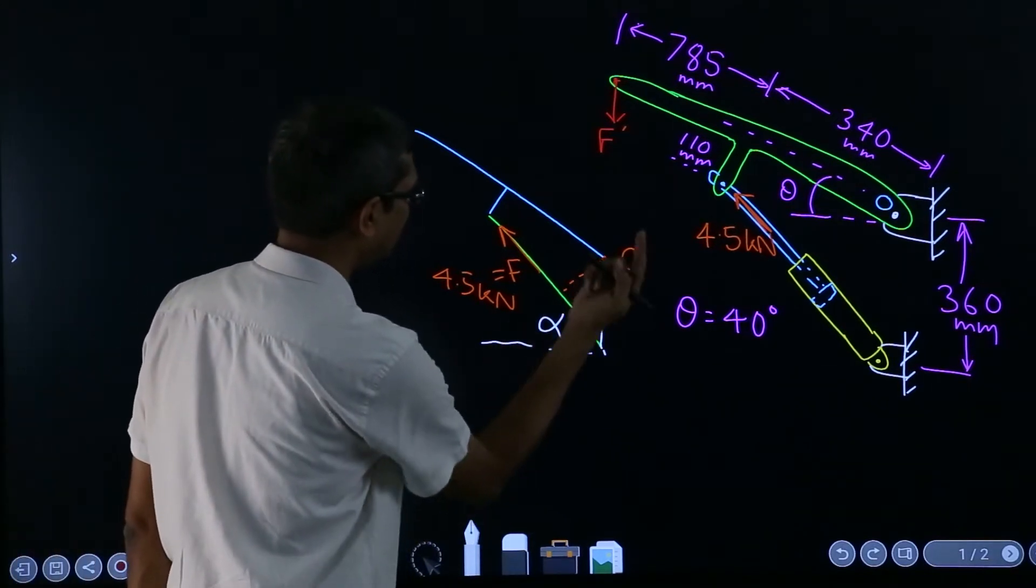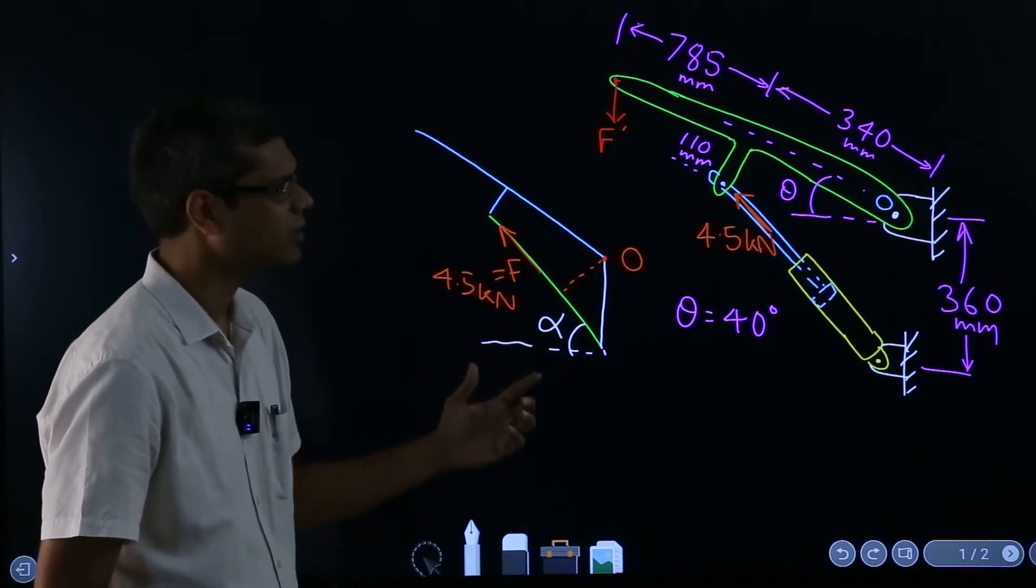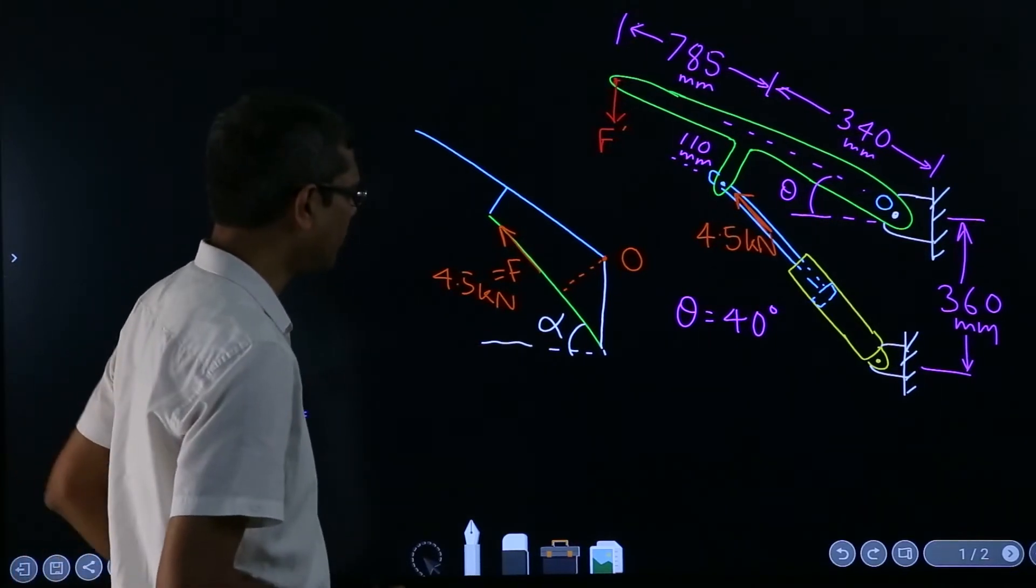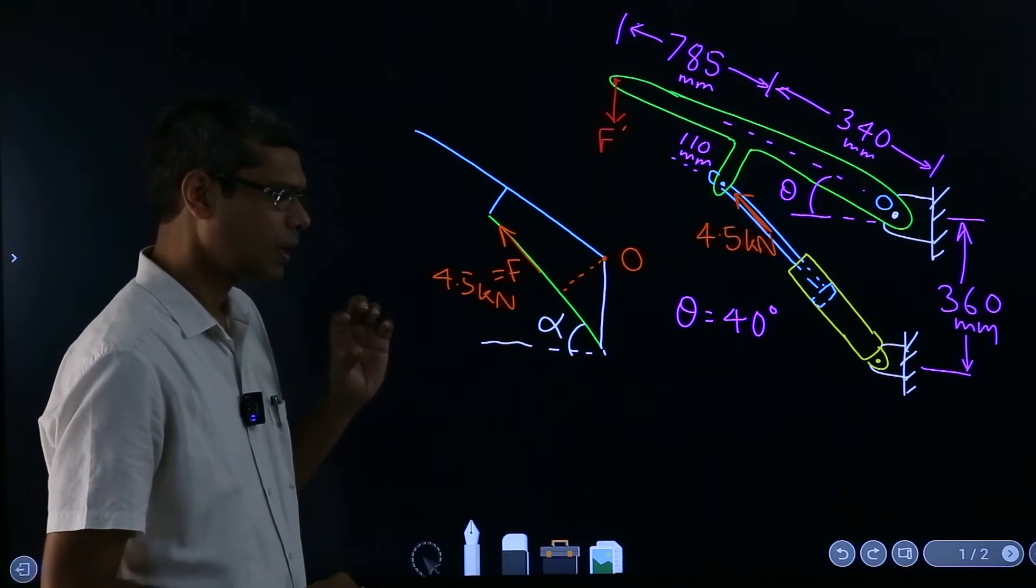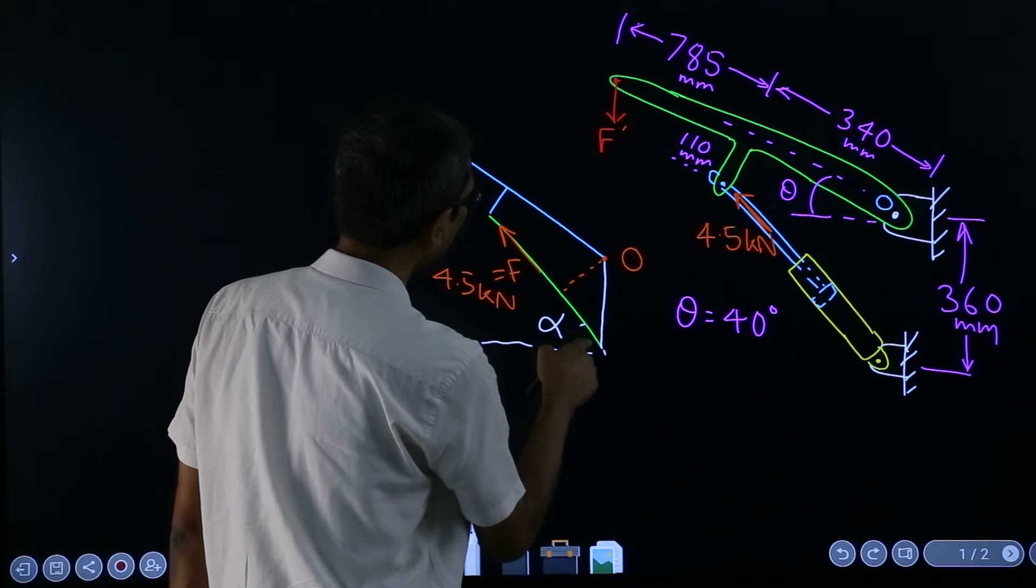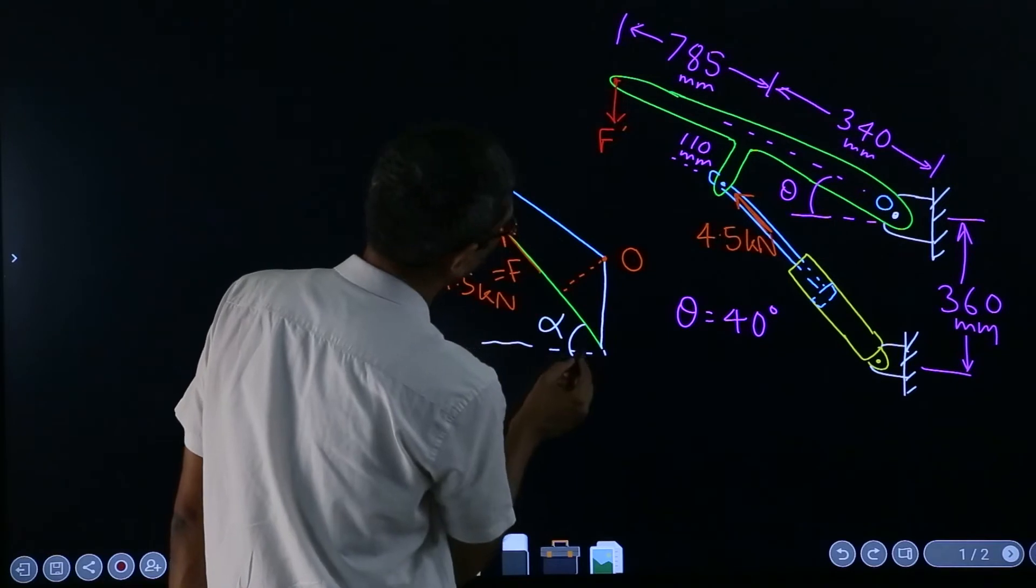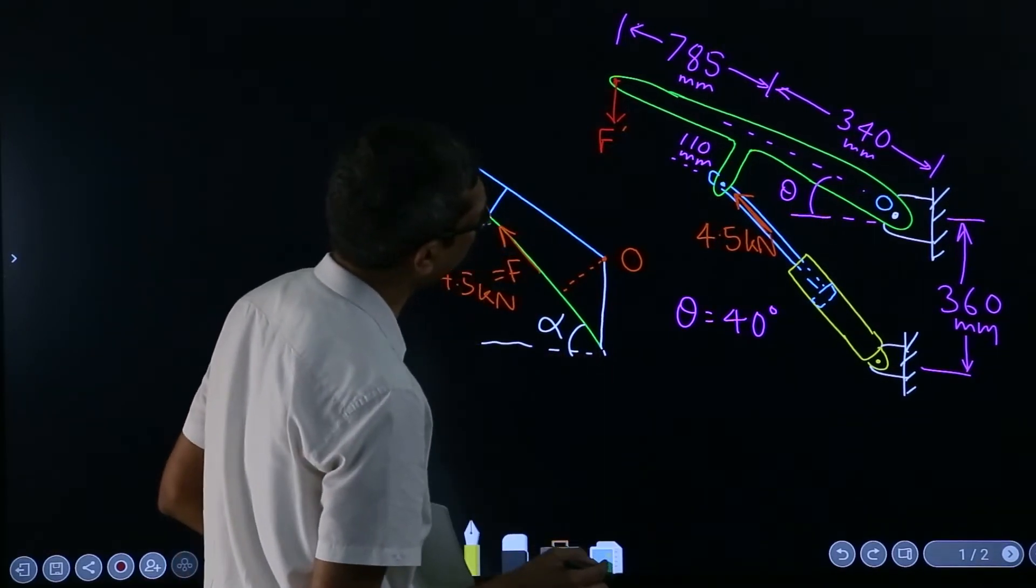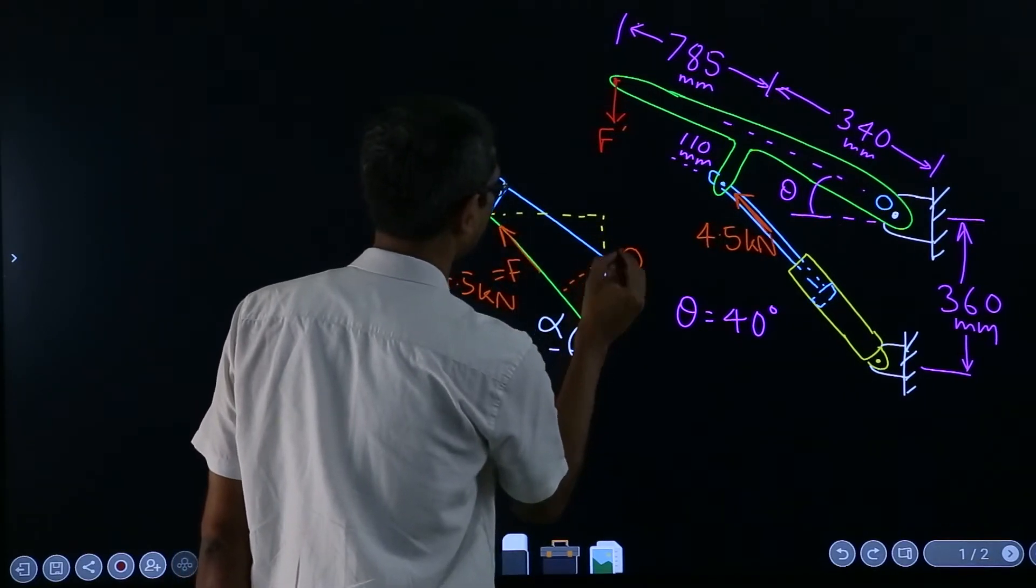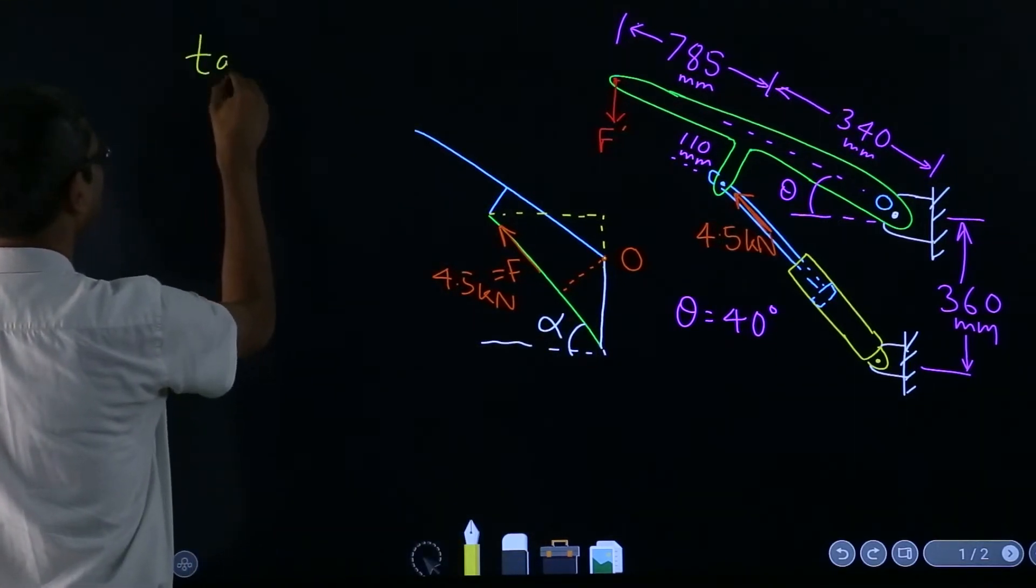Now how to find out this angle? This is one of the thought processes I am talking about, but then I will demonstrate one more which is more mechanical than this because this way of thinking requires a bit of future thinking. Now I can see that this length is known. If I draw a triangle like this, now this will be the tan of alpha.